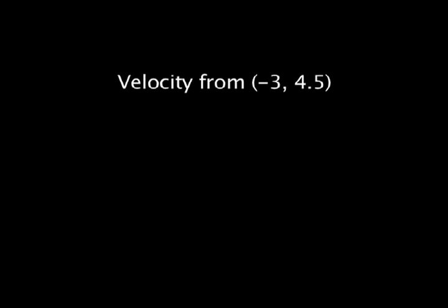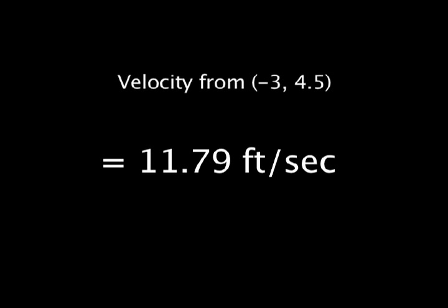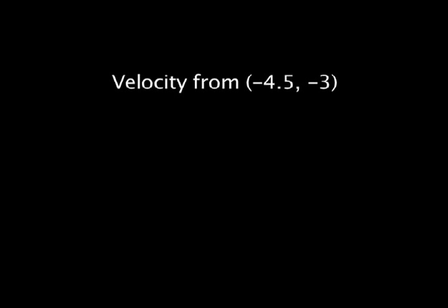The velocity from negative 3 to 4.5 is the arc length over time. The velocity is 11.79 feet per second. From when the ball hits the table until it hits Crossline's paddle, the velocity is 14.06 feet per second.